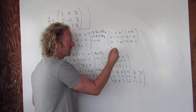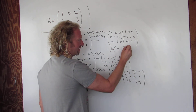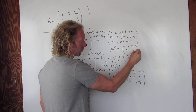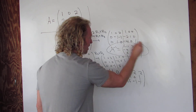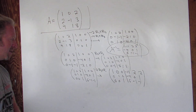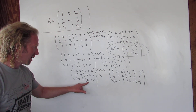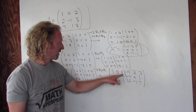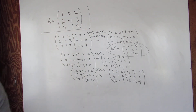So the inverse matrix is whatever is on the right side: negative 11, 2, 2; negative 4, 0, 1; 6, negative 1, negative 1. Super easy to mess up in these problems. Let me just check: negative 12 plus 1 is negative 11, 2 — yeah, looks okay. Hope that made sense.